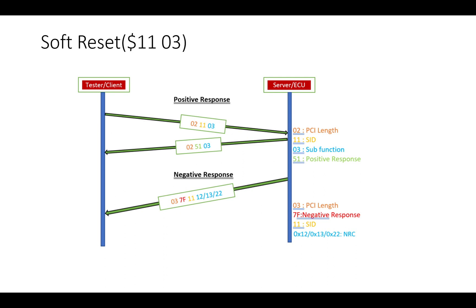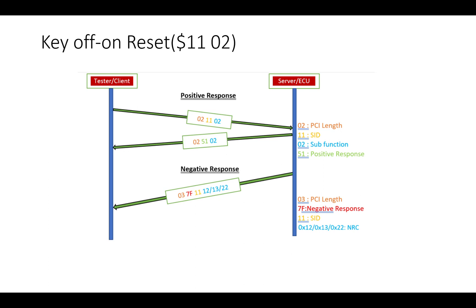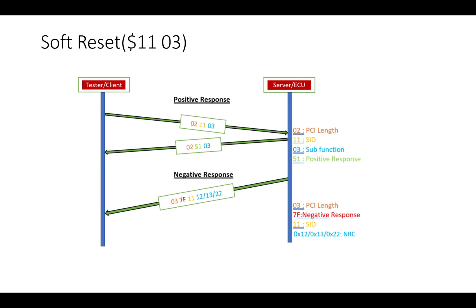Soft reset is equivalent to restarting the main application program, which means the stack pointer of the microcontroller points to the address of the main function — similar to a watchdog timer reset. In soft reset, the application gets restarted immediately, and this is one of the most common reset functionalities used to restart the ECU. The request format is 0x11 followed by 0x03. The positive response is 0x51 followed by 0x03, and the negative response is 0x7F followed by 0x11 followed by the NRC.